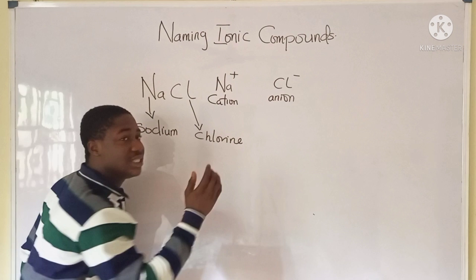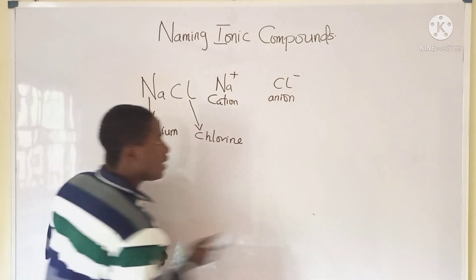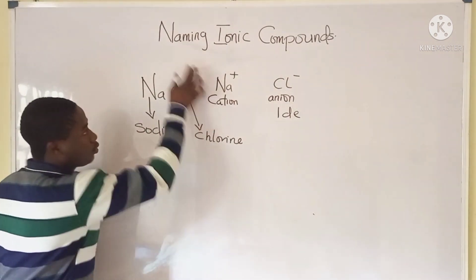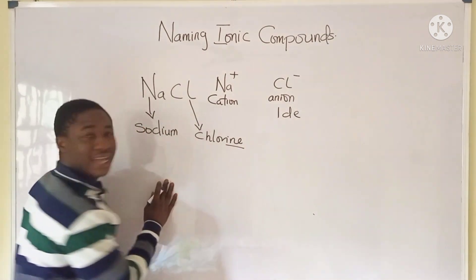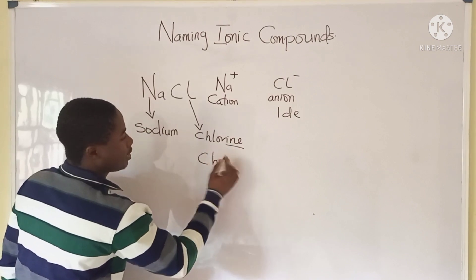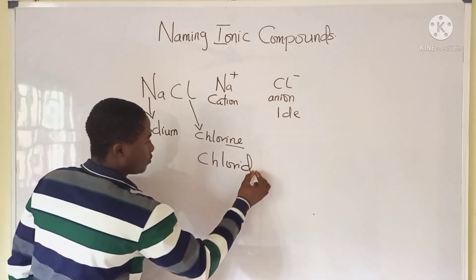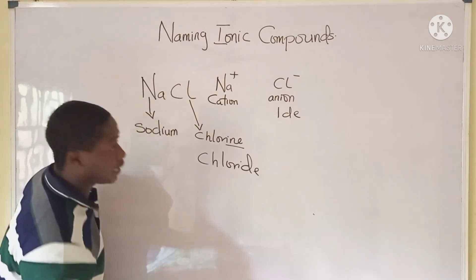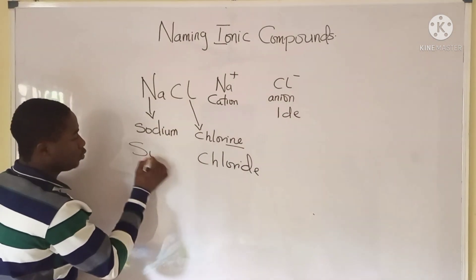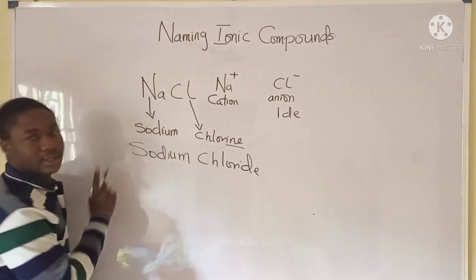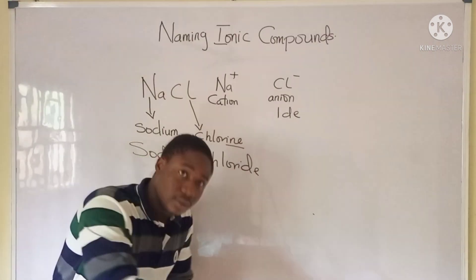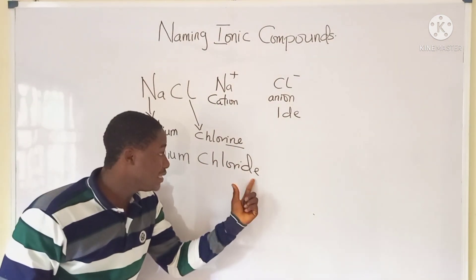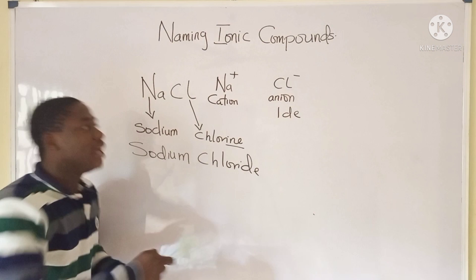Now it should be noted that in naming ionic compounds, the anion — which is the negatively charged atom — we end the name with '-ide.' The anion here is chlorine, so the name of this compound will end with '-ide.' Chlorine becomes chloride because it is negatively charged and therefore an anion. So the name of this compound is sodium chloride. The '-ide' ending is added to the name of the anion.